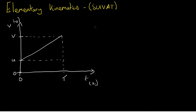Hello everyone. In this video I will introduce kinematics in the form of the SUVAT equations and show you where they come from. If we consider a particle that starts at a speed u and increases in speed over a time of t seconds and ends up at a speed of v, you can see that this is represented by this velocity-time graph here.